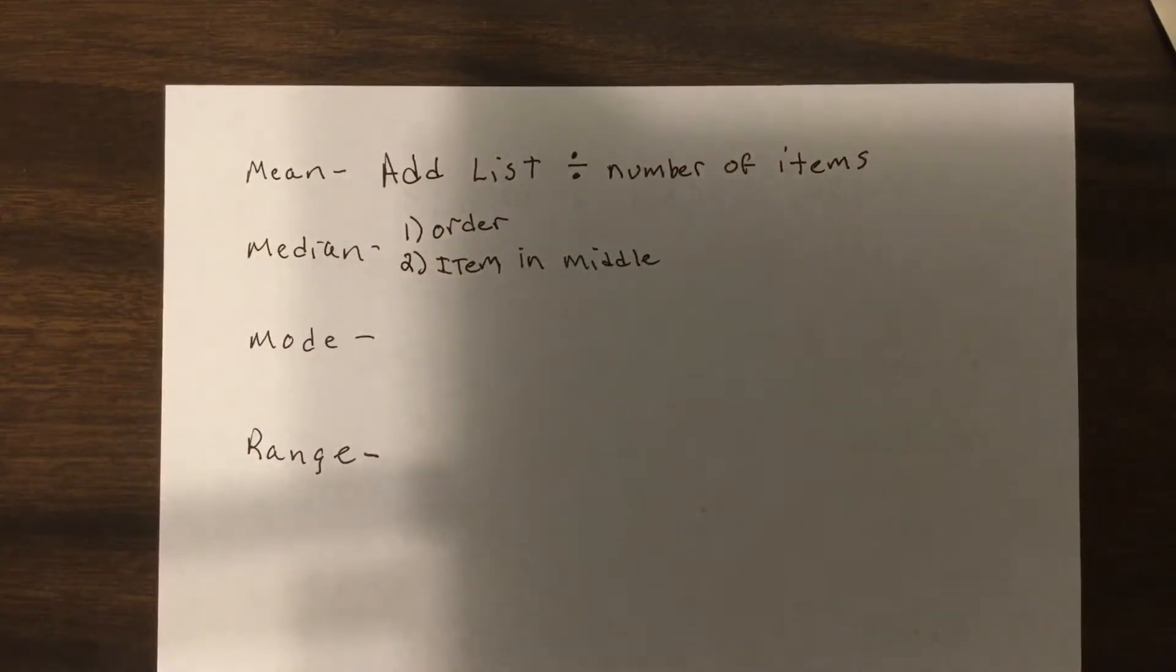So the government tends to use median so therefore there's not an influence that there's a really big number. We really don't want the guy that formed Facebook, super rich, to bring the data towards one direction more than any other number does. Or we don't want a hobo that probably claims he makes a hundred dollars a year bringing it the other direction.